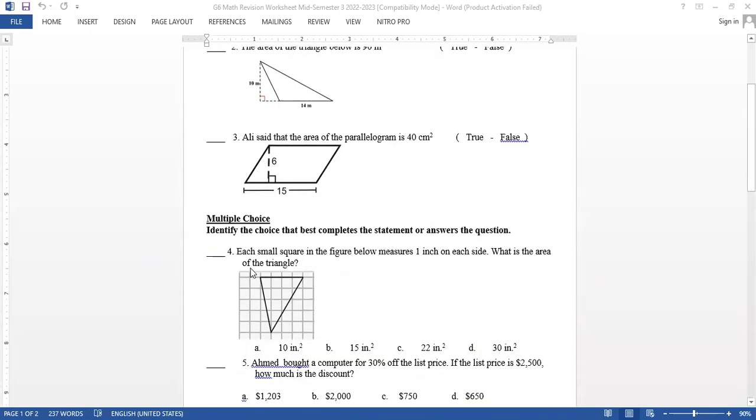Next question: each small square in the figure below measures 1 inch on each side. What's the area of the triangle? As I mentioned before, the area of a triangle is base times height. The triangle here is flipped, so the base is up. Let me count how many inches: 1, 2, 3, 4. So 4 multiply the height, which is 5. 4 multiply 5, and don't forget to divide by 2: equals 10. So the answer is A.